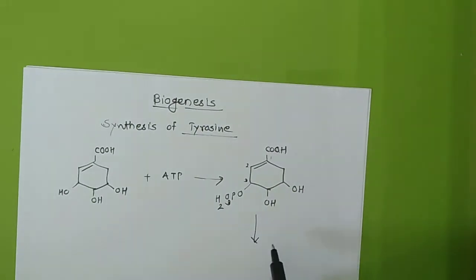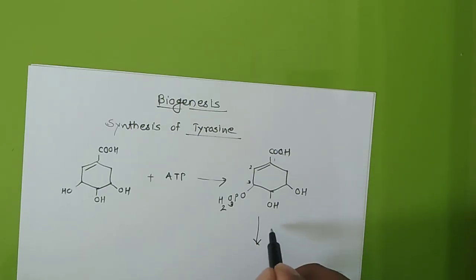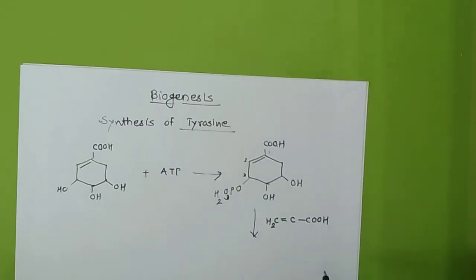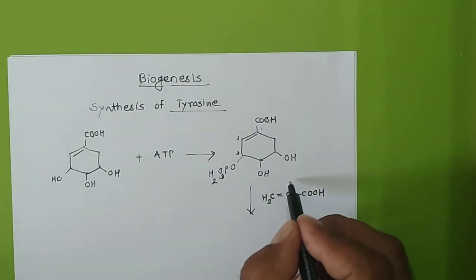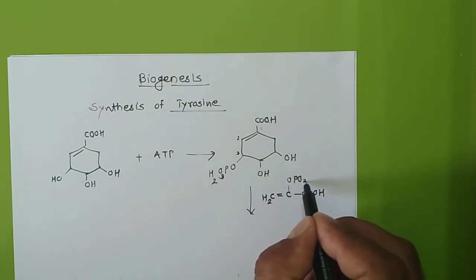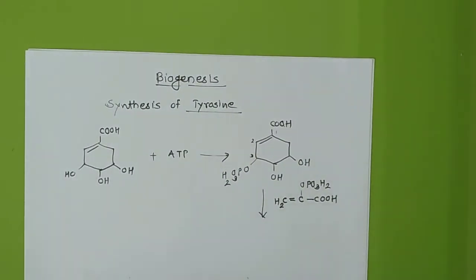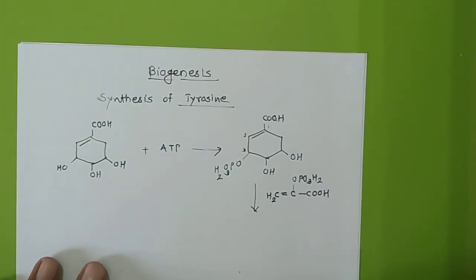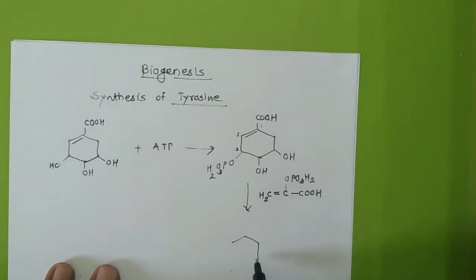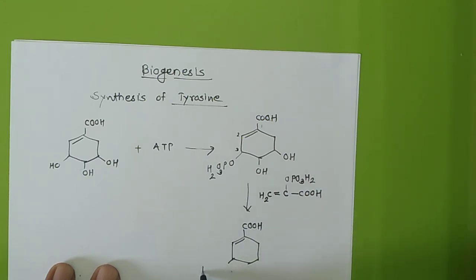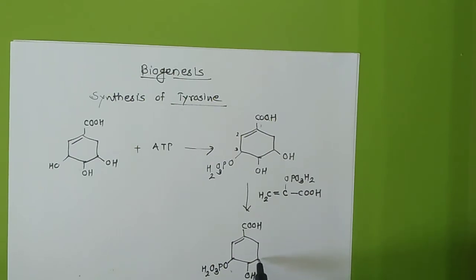Then there will be a reaction of this shikimate-3-phosphate with phosphoenolpyruvate. In some books they have written only OP rather than the full phosphate group, where P is considered as the phosphate group. But since we are writing this mechanism, we will write it in full.